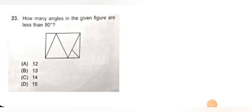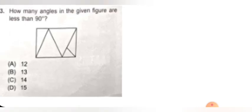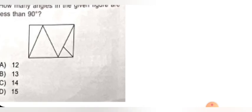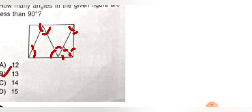Next question: how many angles in the given figure are less than 90 degree? Let me zoom in and find out. Counting the angles less than 90 degree: 1, 2, 3, 4, 5, 6, 7, 8, 9, 10, 11, 12, and 13. So the answer is 13. Option B is correct for this question.